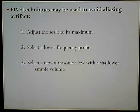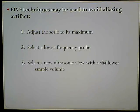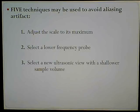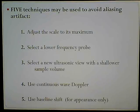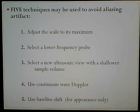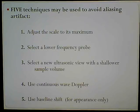Number three: select a new ultrasonic view with a shallower sample volume. This is almost like repositioning the probe so the sample volume or gate is not so far away from the transducer. If we get a shallower gate, we get a higher PRF and therefore less aliasing. Number four: use continuous wave Doppler, because continuous wave Doppler does not aliase. Number five: use the baseline shift — this is for appearances only. It doesn't correct the issue; it just gives us a prettier picture by pulling down that wrap-around effect.